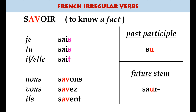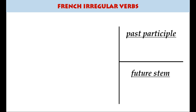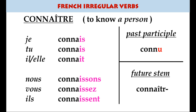Savoir means to know a fact, while connaître means to know a person or place — to be familiar with something. Je connais, tu connais, il connaît, nous connaissons, vous connaissez — the connaiss- stem reminds us a little of the ir verbs.